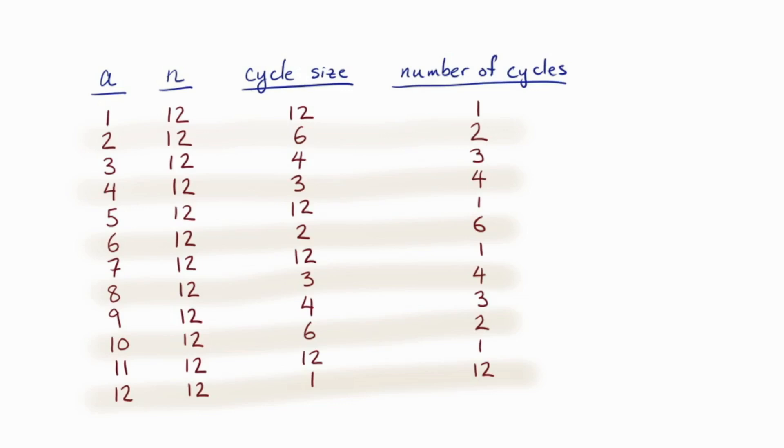So first, you might notice that the cycle size and the number of cycles both divide the modulus. Now, if you pause and think about this, it actually has to happen because the portrait, which has n total elements, is dividing into cycles all of the same size. So in fact, these two numbers actually need to multiply up to the modulus. So if we can figure out one of them, then we can figure out both of them. All right, good.